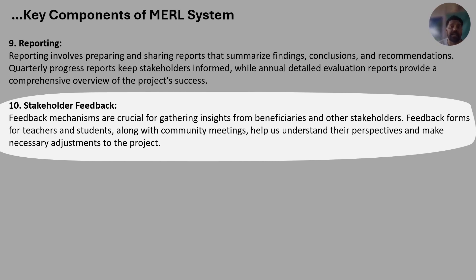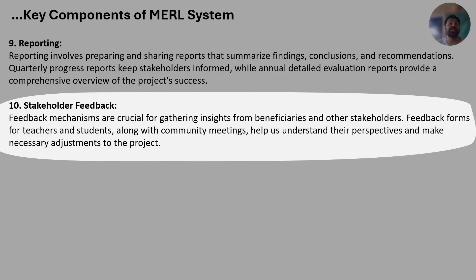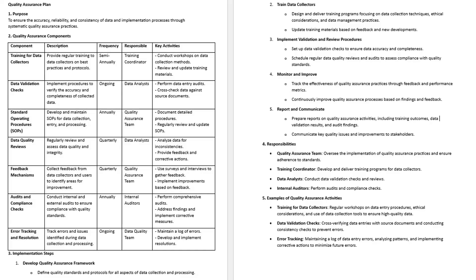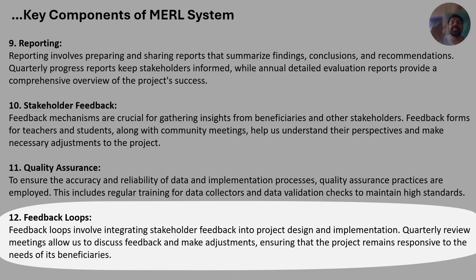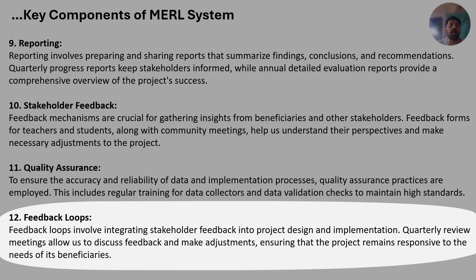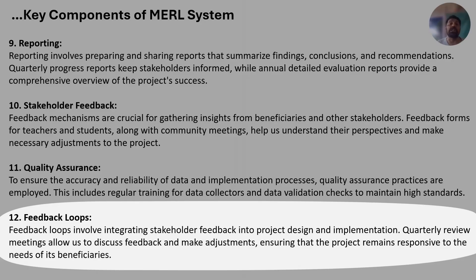Stakeholder feedback is crucial for gathering insights from beneficiaries and other stakeholders. Feedback forms for teachers and students along with community meetings help understand perspectives and make necessary adjustments. Quality assurance ensures accuracy and reliability of data through regular training for data collectors and data validation checks. Feedback loops integrate stakeholder feedback into project design and implementation — quarterly review meetings discuss feedback and ensure the project remains responsive to beneficiary needs.